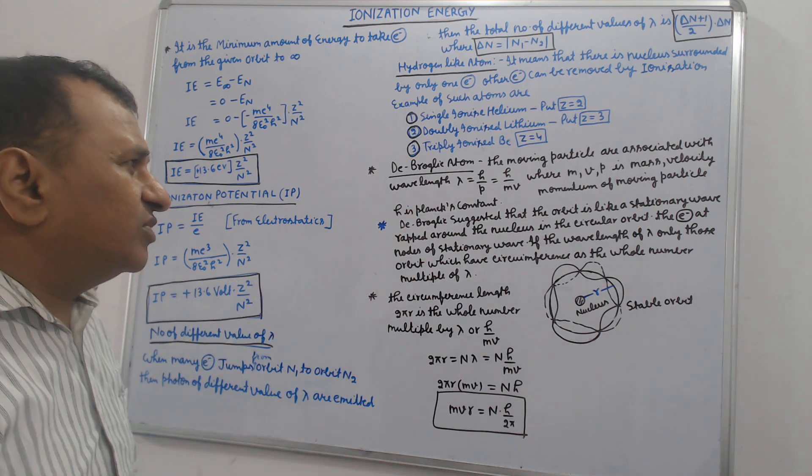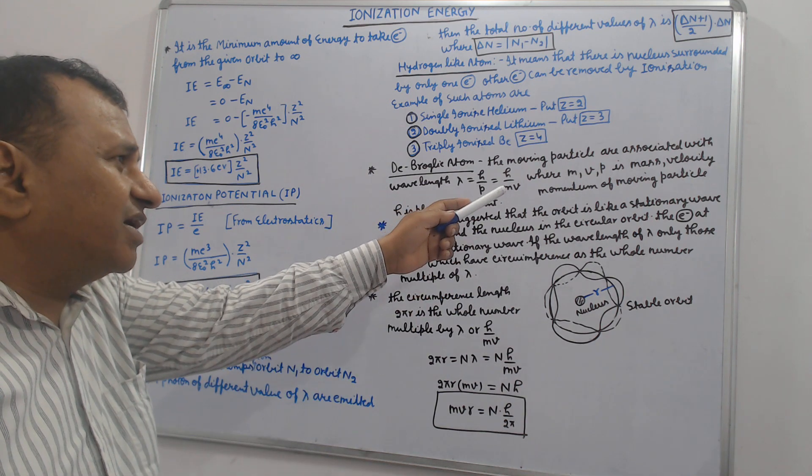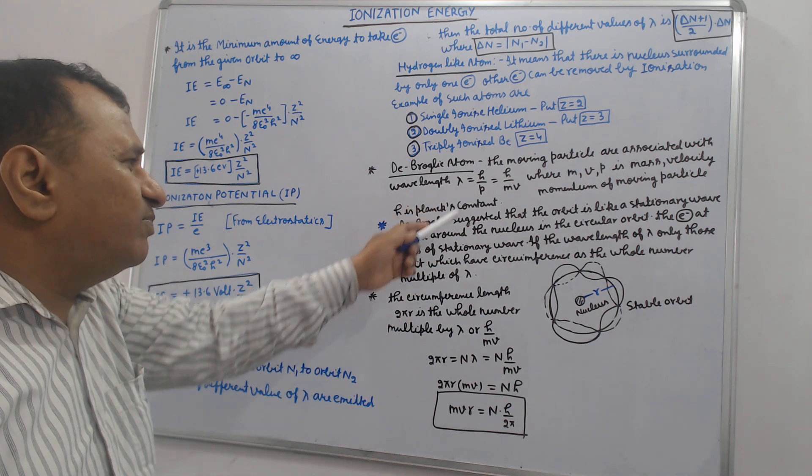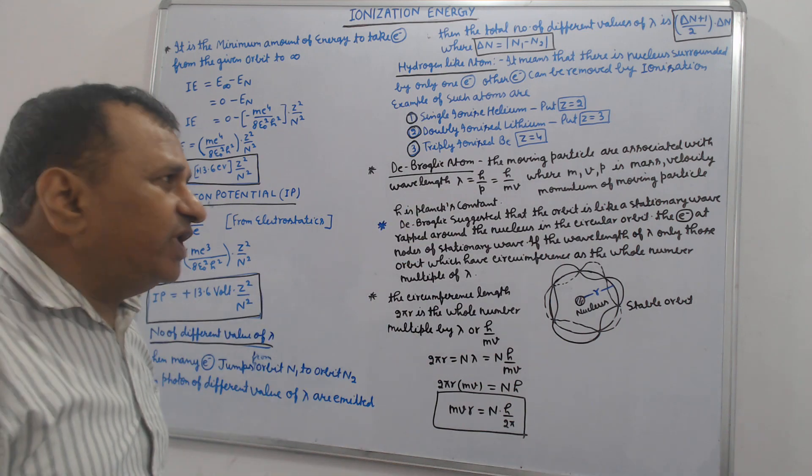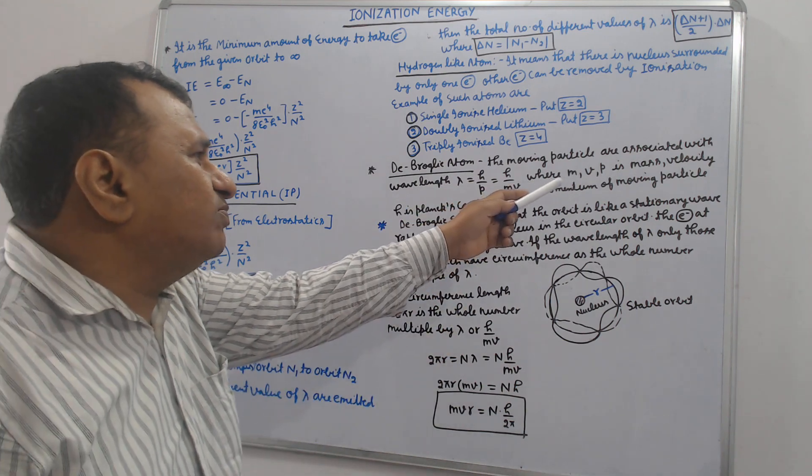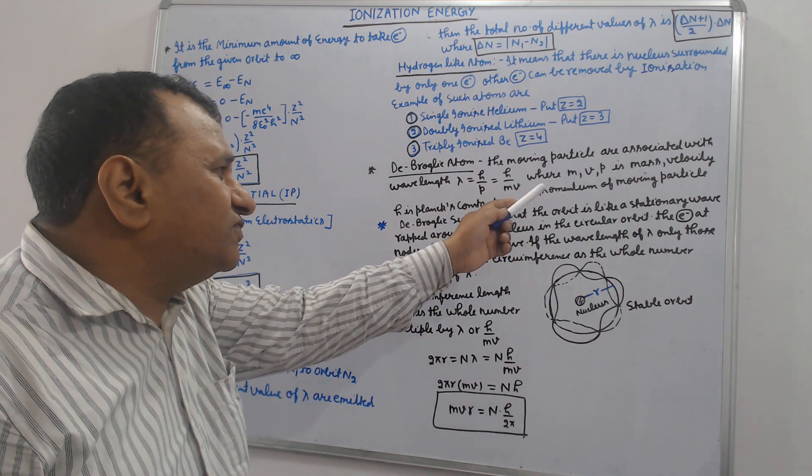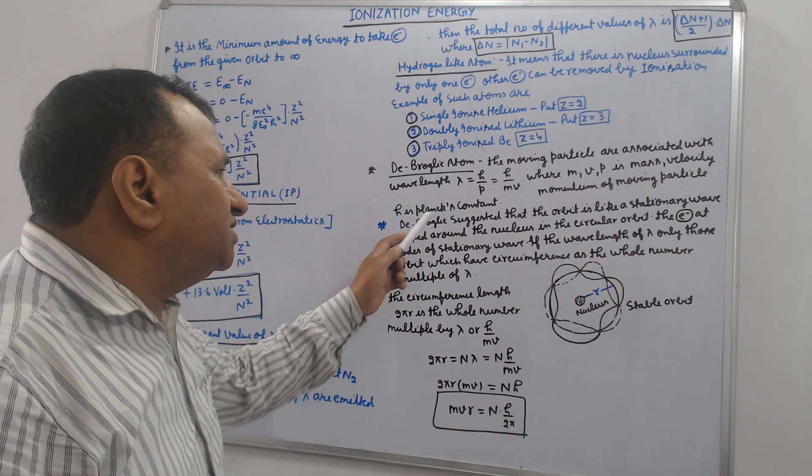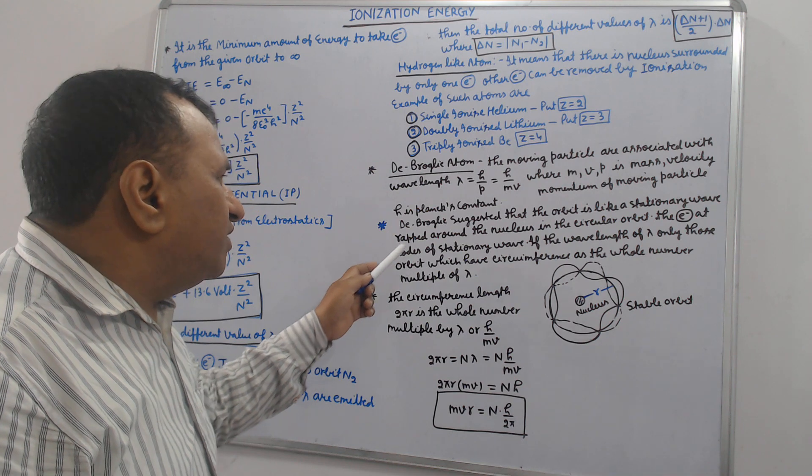Next topic: de Broglie atom. The moving particles are associated with wavelength λ equal to h by p, equal to h by mv, where p is momentum, m is mass, v is velocity of moving particle, h is Planck's constant.